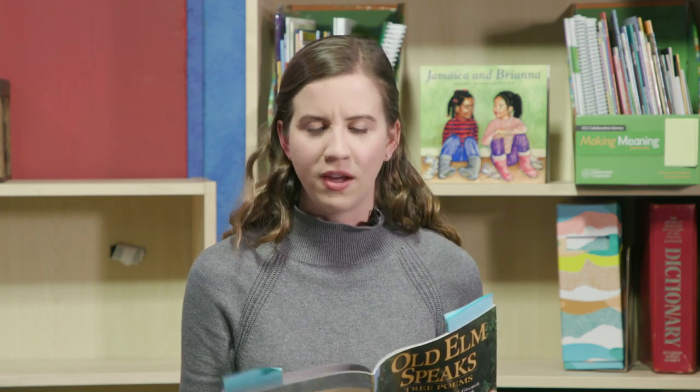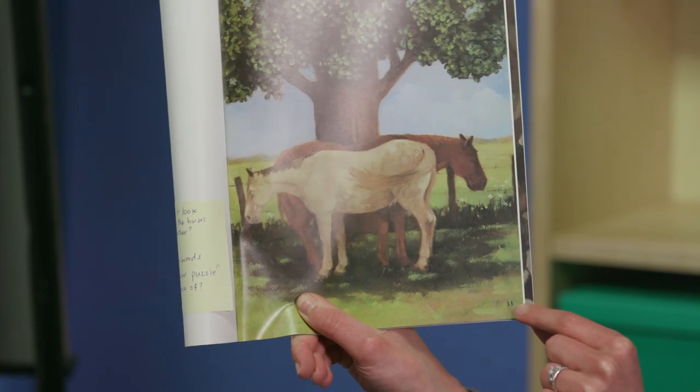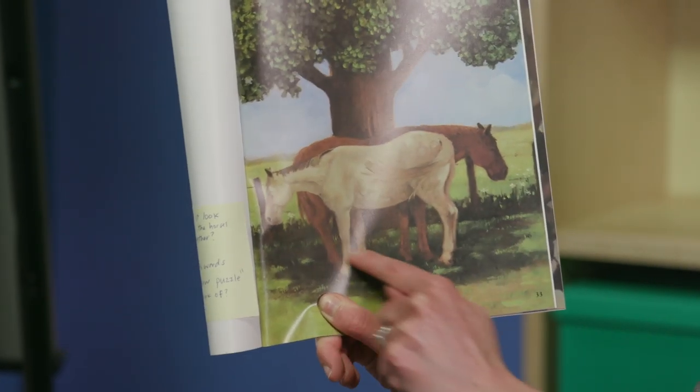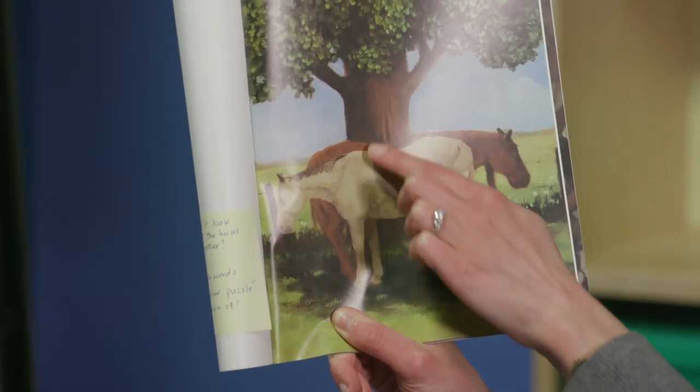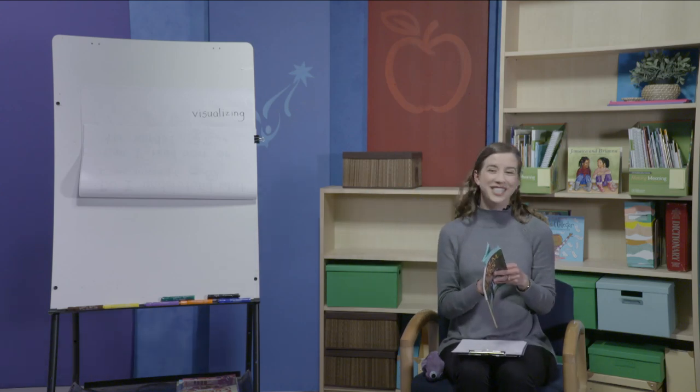I'm going to go ahead and show you the picture that the author and illustrator thought of. But for some of you who want a challenge, close your eyes — you already did some visualizing. If you want to take a look, you can now. Here's what the illustrator thought this poem looked like: two horses standing under some shade beneath a big tree, right next to each other. Way to go for challenging yourself — so many of you didn't even look.